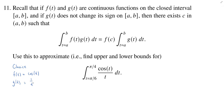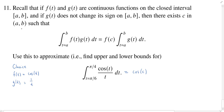By the generalized mean value theorem, the given integral is equal to f of c — so that would be the cosine of c — where we don't know what c is. We just know it's some value in between π/6 and π/4, times the integral from π/6 to π/4 of 1 over t dt.